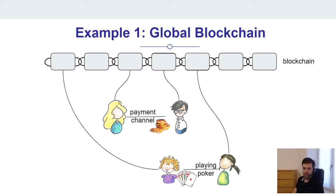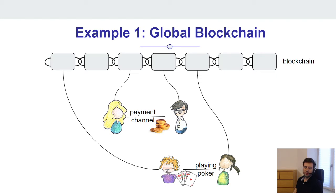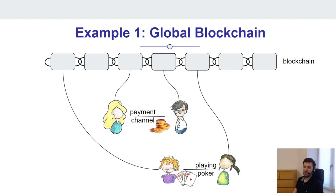Consider our first example: a global blockchain. Assume you're designing a payment channel protocol which enables a lot of off-chain transactions, but eventually you settle or close the channel and send transactions to a settlement layer, for example the Bitcoin blockchain. At the same time, someone might be playing poker and paying out rewards also via the Bitcoin blockchain. In the future, maybe other protocols join, such as fair exchange of digital goods or atomic swaps. All of them access the same Bitcoin blockchain, and those transactions end up on the same chain. These data coexist — more technically, all these protocol sessions actually share a certain state among each other.